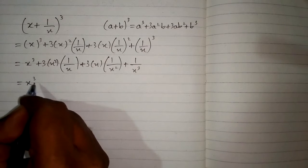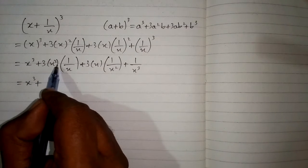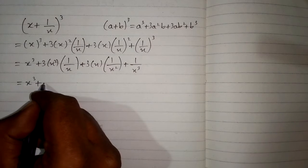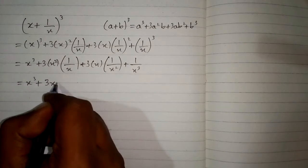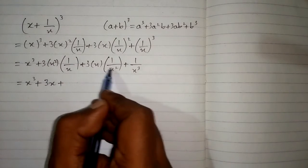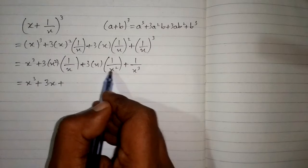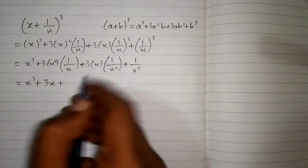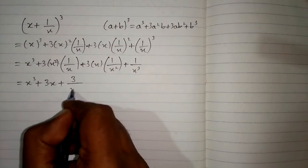Then we have x³ plus. We can subtract the power of x. So 2 minus 1 is 1, giving us x to the power 1. Here again we subtract the powers, giving x to the power 2 minus 1. And 3 times 1 is 3, so we write 3 upon x.